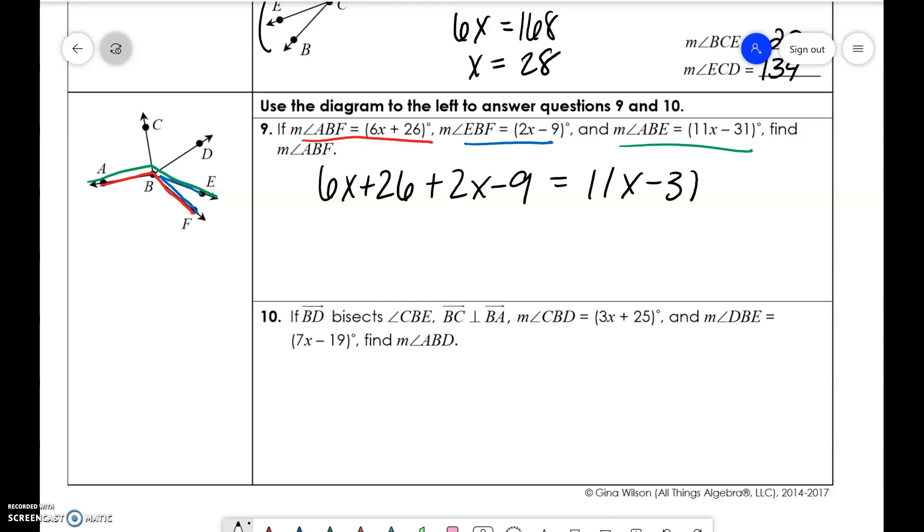So if we do this, we get 8x plus 17. And then 3x is equal to 48. X is equal to 16.